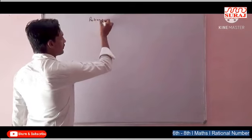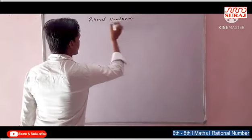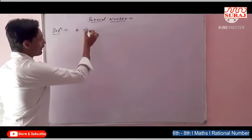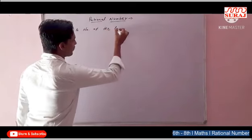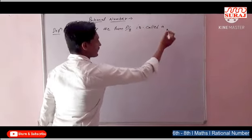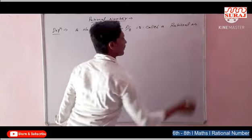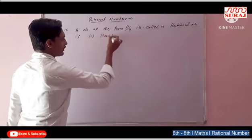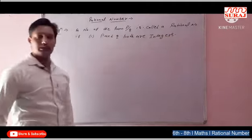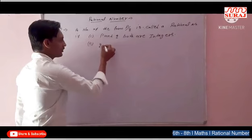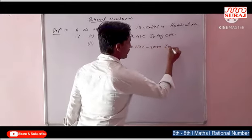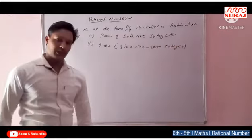Start karte hain definition se. Definition kya hoti hai rational number ki — a number of the form P by Q is called a rational number. Condition apply hoti hai: first condition — P and Q both are integers.